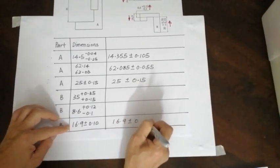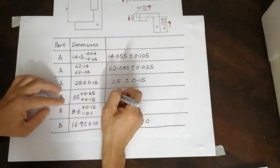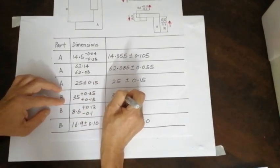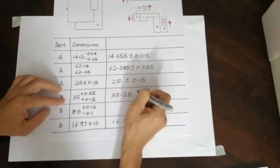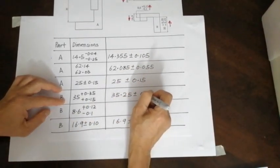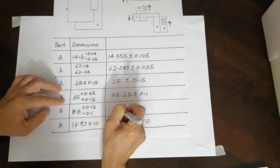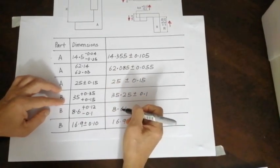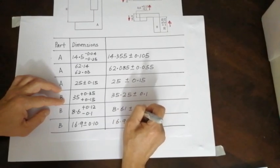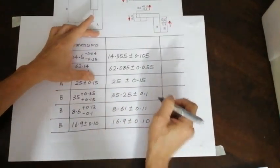Then this will be 35.25 minus 0.1. And then this will be 8.61 plus and minus 0.11. This is normalized.